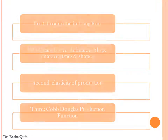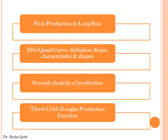In order to get to the optimal production choices in the long run, we need to first revise production and cost in the long run. Starting with production, we will revise the isoquant curve — its slope, how to measure it, its main characteristics, and different shapes. Second, we'll move to the elasticity of production: definition, measurement, and applications on the Cobb-Douglas production function — its main characteristics and how to measure output elasticity.